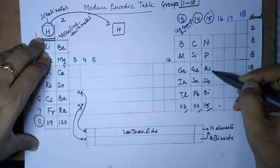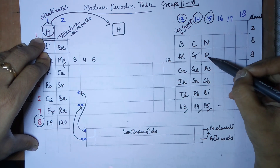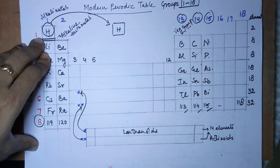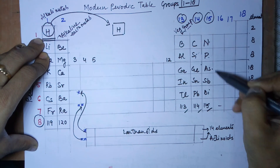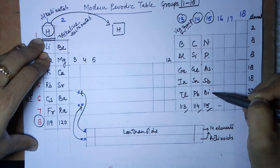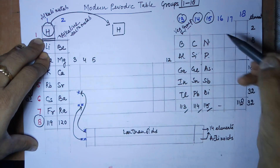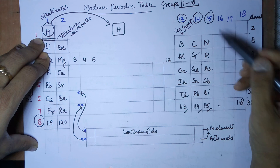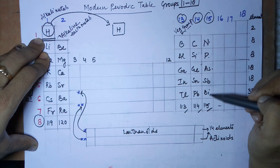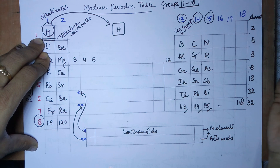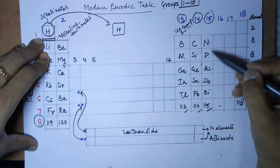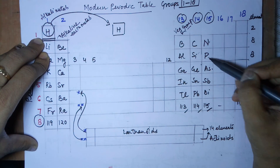The censored version for group 15 is: 'Nana patakar asalme sabka bhai hai.' The non-censored version is: 'Nai padosan asalme sabki behen hai' — or students prefer 'nai padosan asalme sabki bivi hai.' Choose your pick — all three help you remember nitrogen, phosphorus, arsenic, antimony, and bismuth.